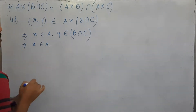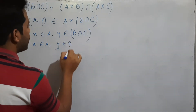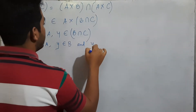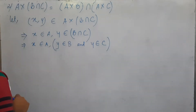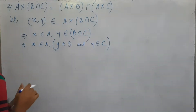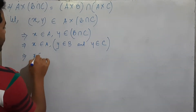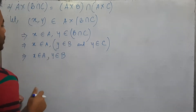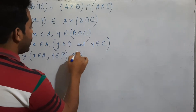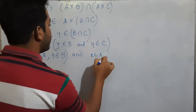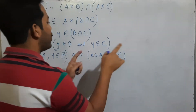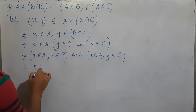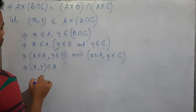X belongs to A. Y belongs to the intersection of the key. Y belongs to B and Y belongs to C. So X belongs to A, and Y belongs to C. The other way: X, Y belongs to A cross B.